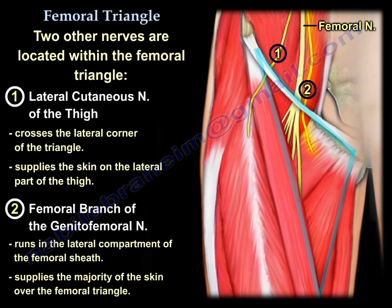The lateral cutaneous nerve of the thigh crosses the lateral corner of the triangle and supplies the skin on the lateral part of the thigh. The femoral branch of the genitofemoral nerve runs in the lateral compartment of the femoral sheath and supplies the majority of the skin over the femoral triangle.